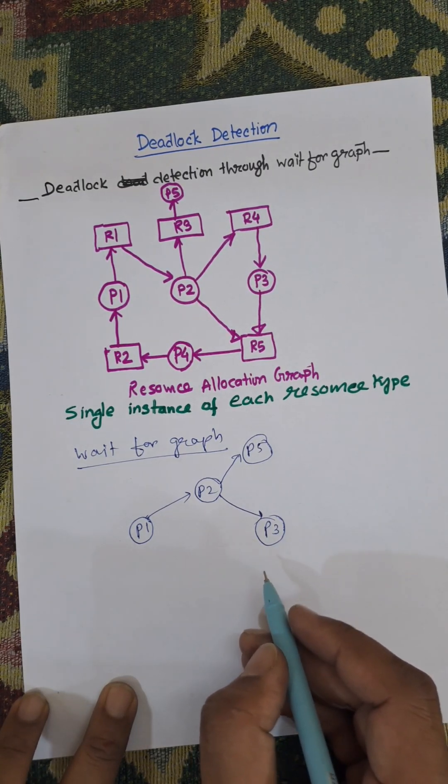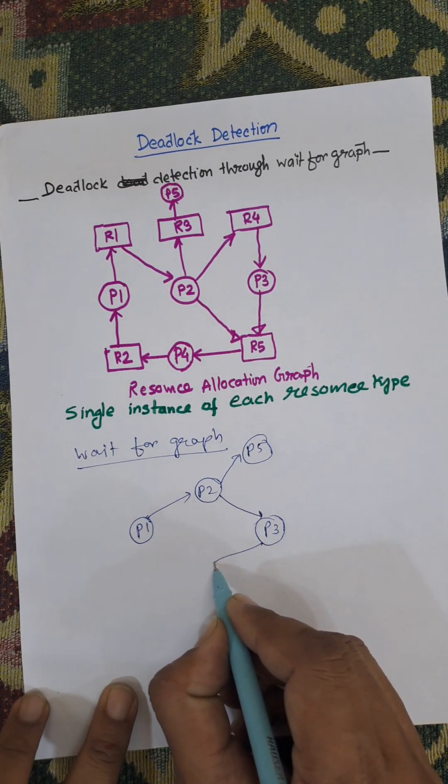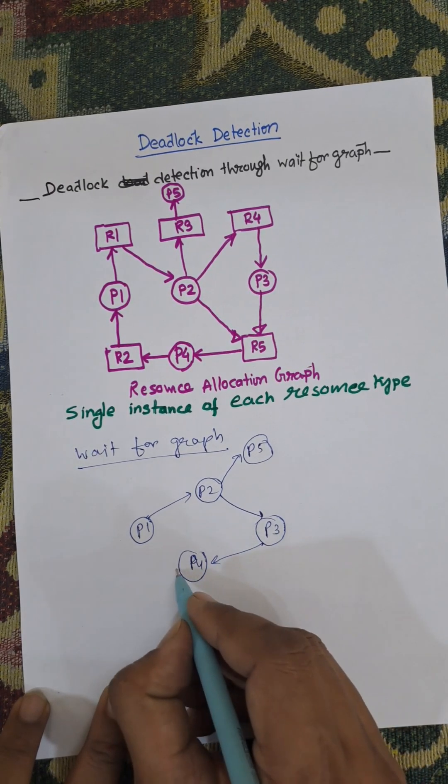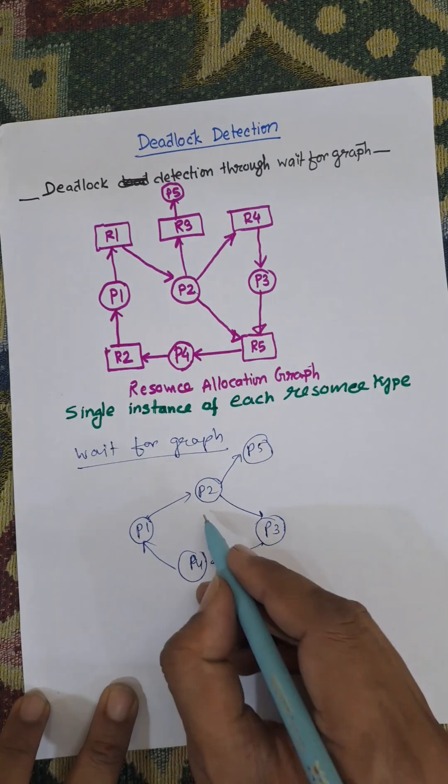From P3 it moved to P4. From P4 it goes to P1, from P2 it goes to P4.